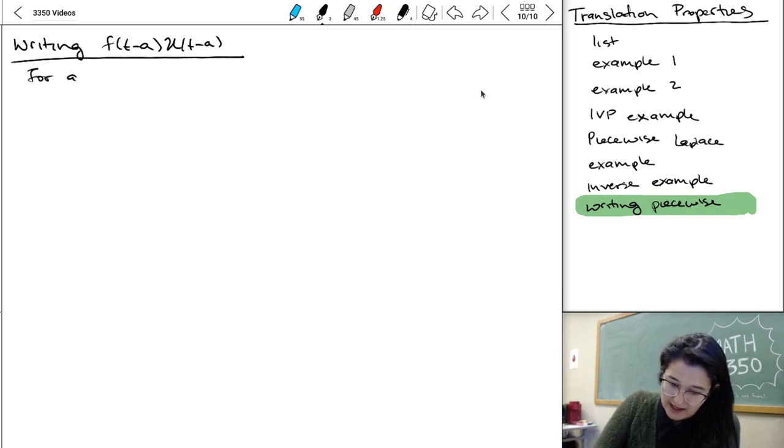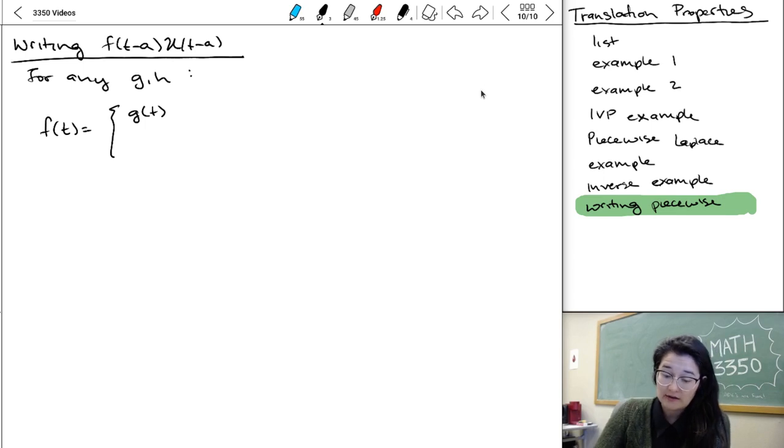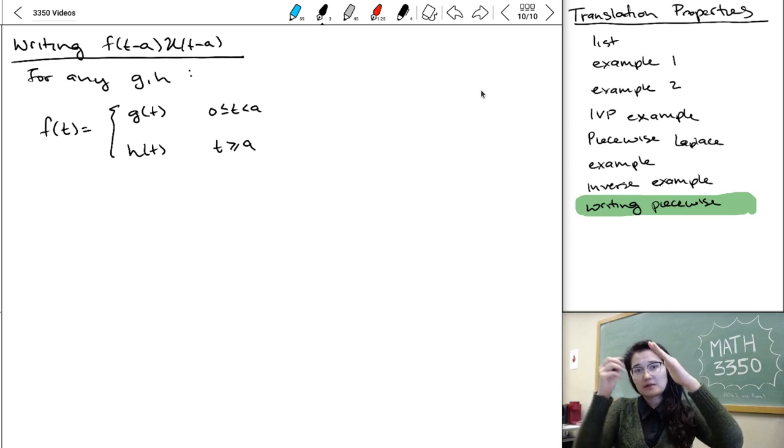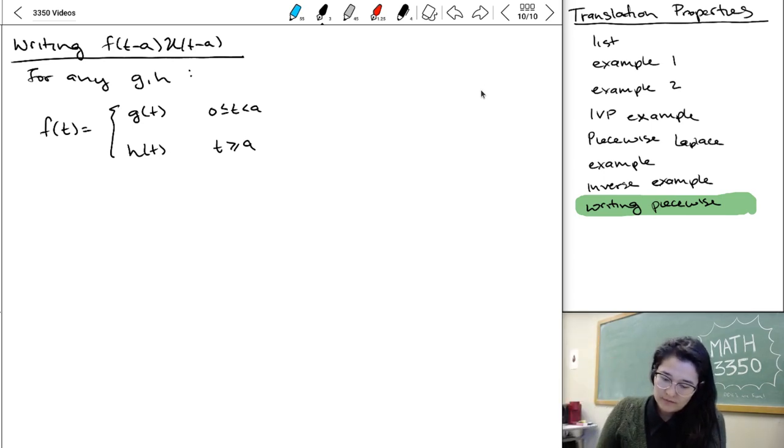So for any G comma H, we can do F of T starts at some function G and then becomes some function H. So like say it's linear and then it becomes like exponential. That's the first case we're gonna think about. And then we'll also think about when we have a bunch of zeros that we need to handle and then in the middle, it takes on some value.